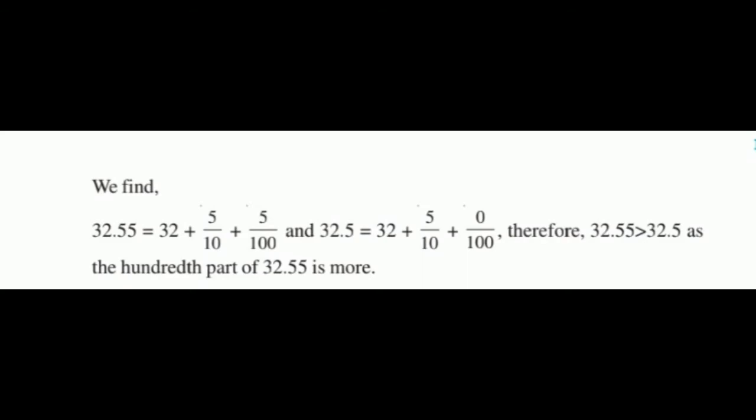You can see in both numbers the hundredth part: in the first case 5 by 100 is coming, but in the second case there is 0. So 5 is always greater than 0. Therefore, the answer is 32.55 is greater than 32.5.